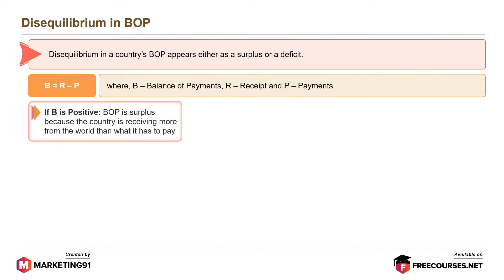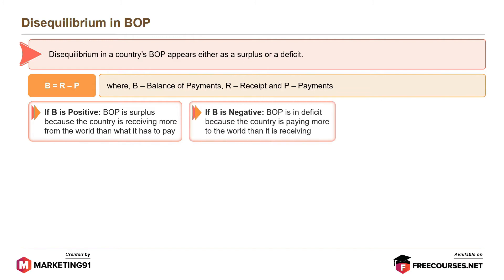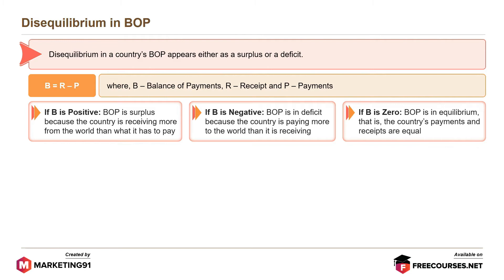If B is positive, BOP is surplus because the country is receiving more from the world than what it has to pay. If B is negative, BOP is in deficit because the country is paying more to the world than it is receiving. And if B is zero, BOP is in equilibrium — that is, the country's payments and receipts are equal.